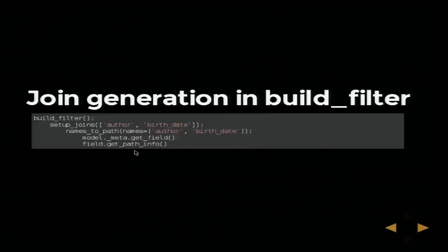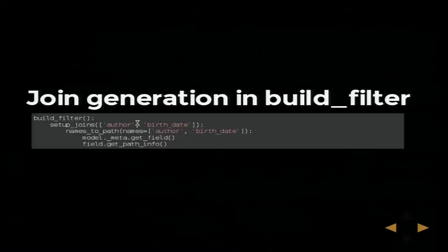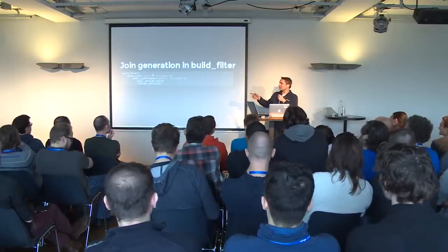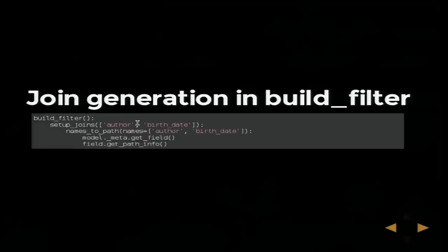So how does join generation actually work? Many people don't know, but really it's quite simple when you take all the corner case handling away. The joins are generated by path info structures. The problem is people don't get to see that this is all that happens — those corner cases hide the simplicity. We are going to look at what these methods do.